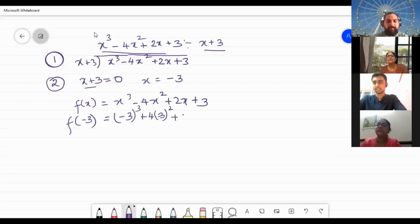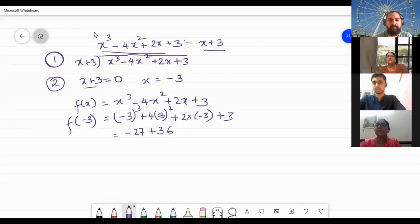-3. So 2 into -3 plus 3. If I get the value of this as 0, so this is what? 3³ is 9, 9 × 3 is 27, it will be -27. This is +36. Yes.